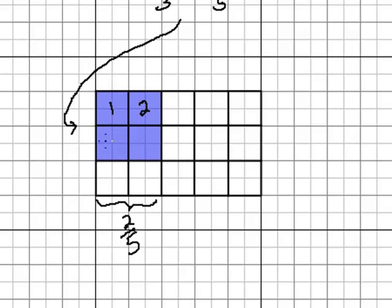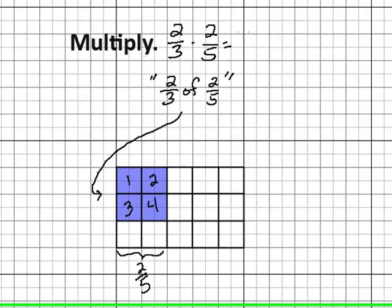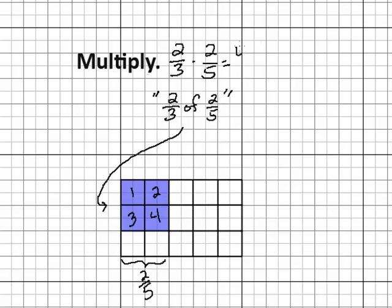There's 15 of these little squares in the entire rectangle. Our purple area represents four of those. So visually, the answer to our question, two-thirds times two-fifths, is four-fifteenths.